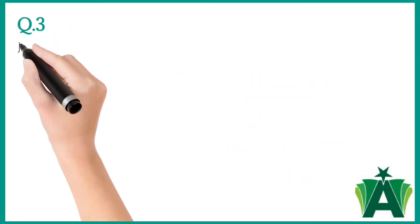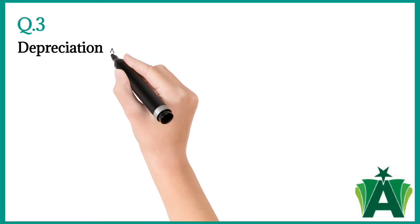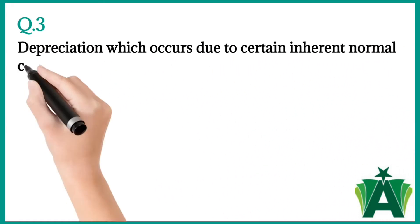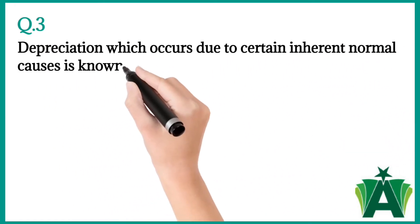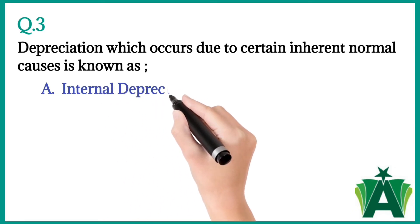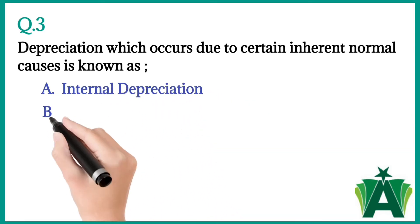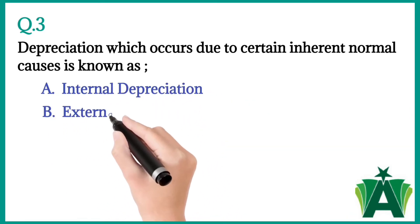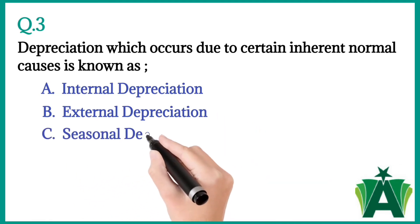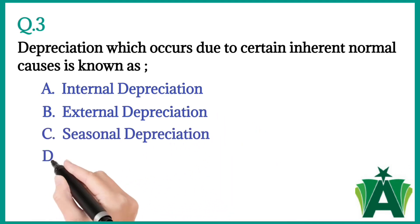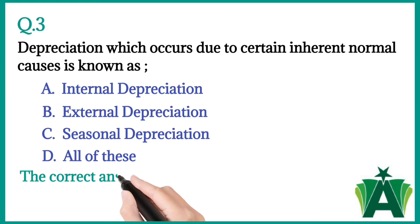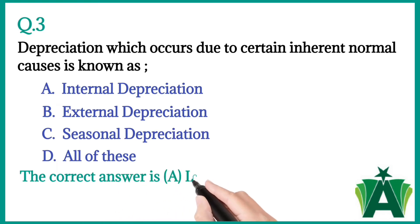Question number three: Depreciation which occurs due to certain inherent normal causes is known as a) internal depreciation, b) external depreciation, c) seasonal depreciation, d) all of these. The correct answer is a) internal depreciation.